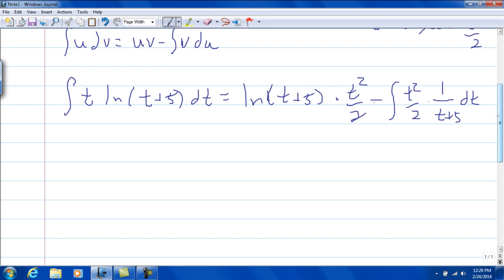So let's take a look at this integral part. Let me rewrite this one more time. This is going to be t squared over 2, natural log of t plus 5, minus 1 half, pull that 1 half out, integral of t squared over t plus 5 dt.